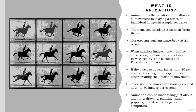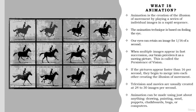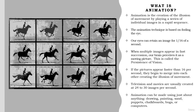The animation technique is based on fooling the eye. Did you know that our eyes can retain an image for 1/16th of a second? So when multiple images appear in fast succession, our brain perceives it as a moving picture. This is called the persistence of vision. When pictures appear faster than 16 per second, they begin to merge into each other, creating the illusion of movement. When the images are strung together and projected at a speed of at least 16 frames per second, the illusion of continuous movement is created. Television and movies are usually created at 24 to 30 images per second. That is how animation works.